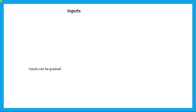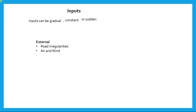The types of inputs, as already mentioned, are two types. Beyond that, inputs can be gradual, constant, or sudden. A gradual input is something which is gradually increasing. A constant input is something like a wind force acting on a vehicle that is cruising — the force exerted by the wind remains constant. A sudden input is something like a bump encountered while driving, which causes a sudden disturbance on the tire.